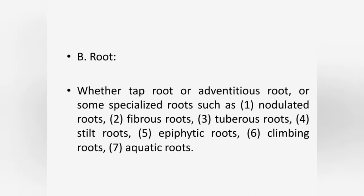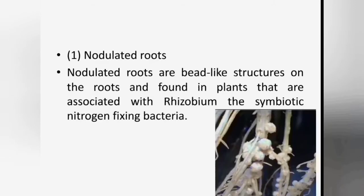Next, let's see the terminologies based on roots. The major root system of plants is classified into tap root and adventitious root. Here we discuss some specialized roots such as nodulated, fibrous, tuberous, stilt, epiphytic, climbing and aquatic root. Nodulated roots are bead-like structures on the roots found in plants associated with Rhizobium, the symbiotic nitrogen-fixing bacteria, mostly found among the legume family Fabaceae.